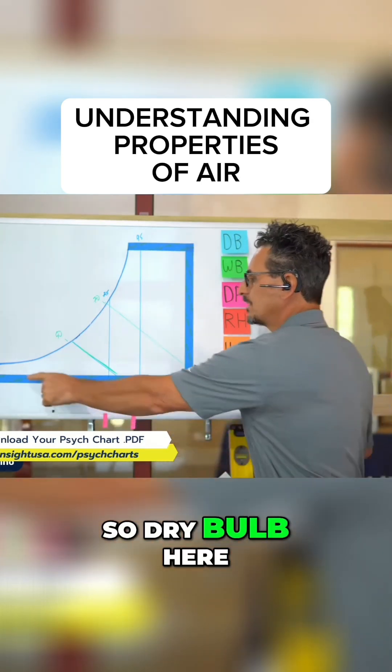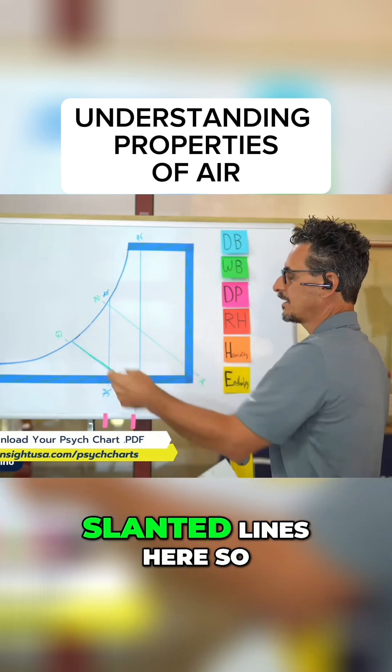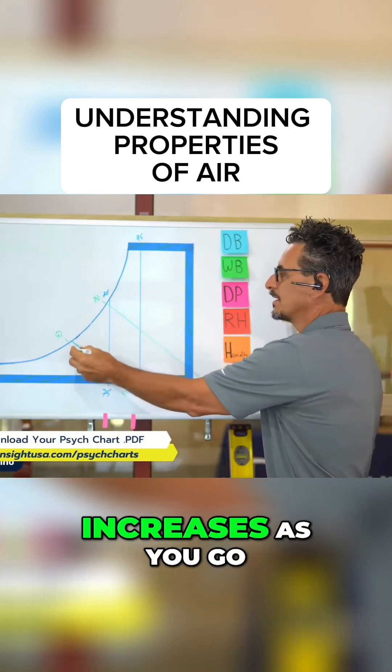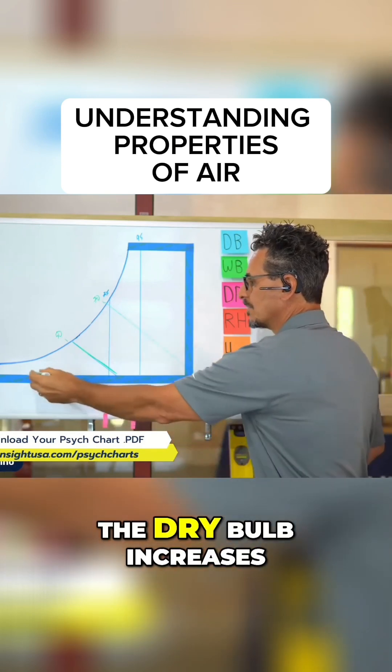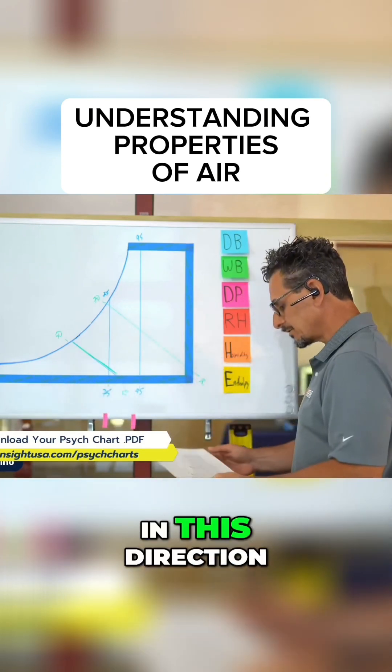So dry bulb here, wet bulb are these slanted lines here. The wet bulb increases as you go up in this direction. The dry bulb increases as you go in this direction.